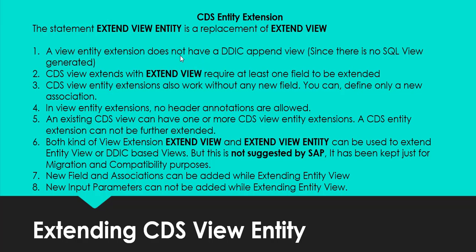In the old 'extend view' method, you had to add at least one field in the extension for it to work — you could add an association, but at least one field was required. That is not the case with the new 'extend view entity'. With the new one, adding a field is not mandatory; you can have only associations in the extension without any fields.